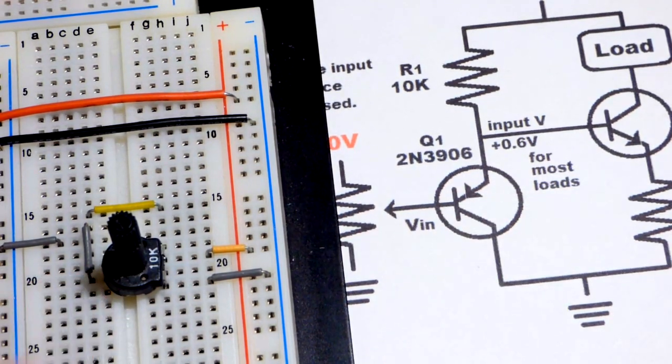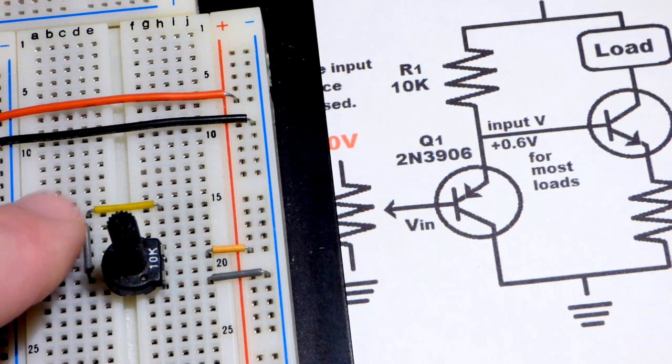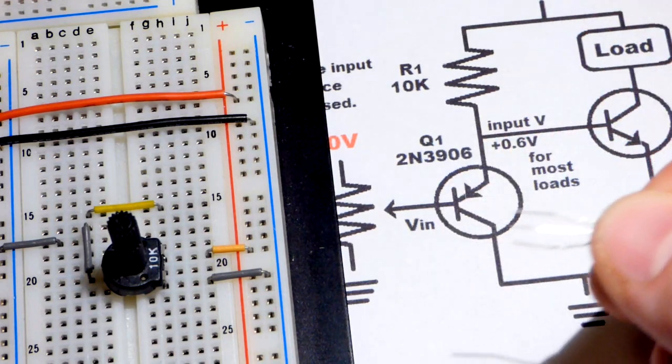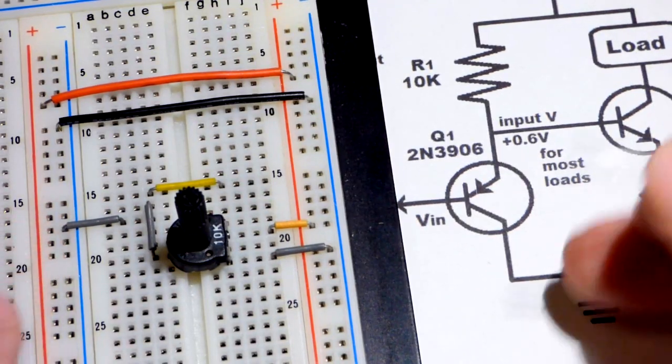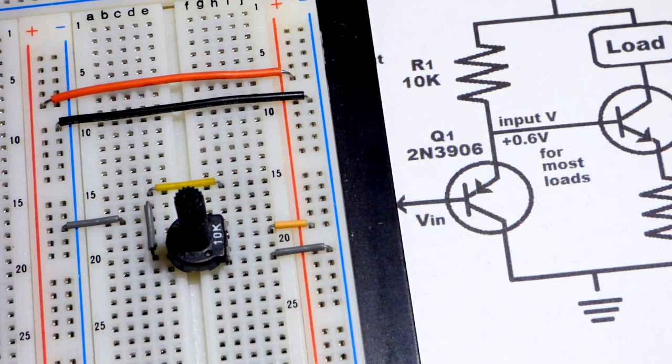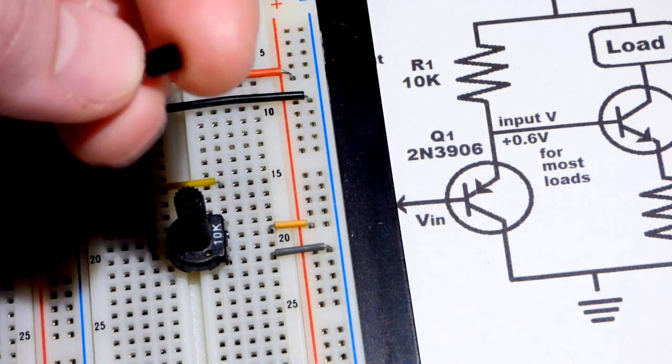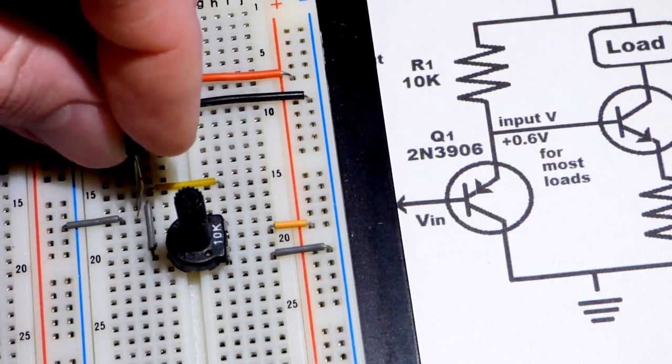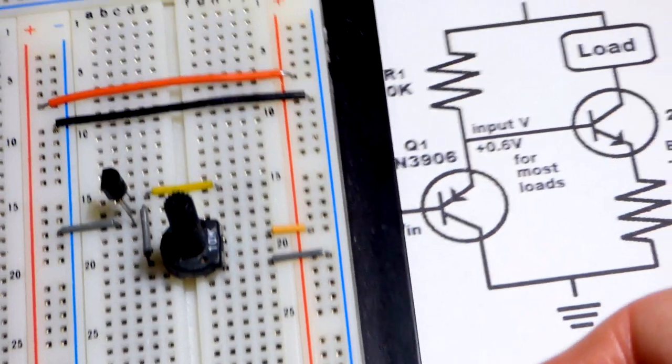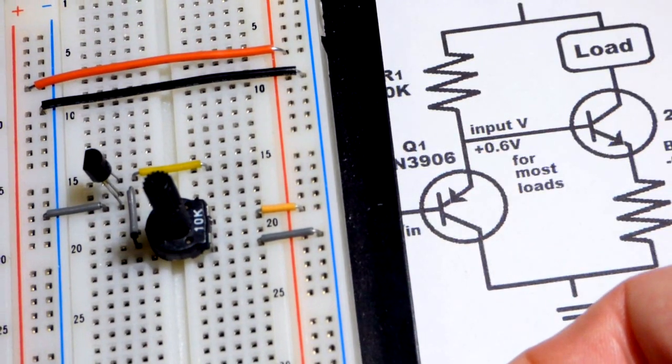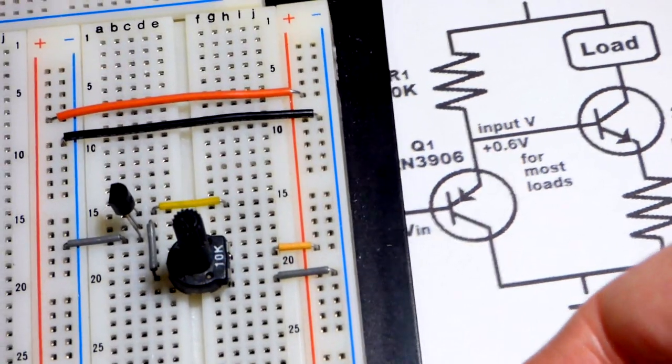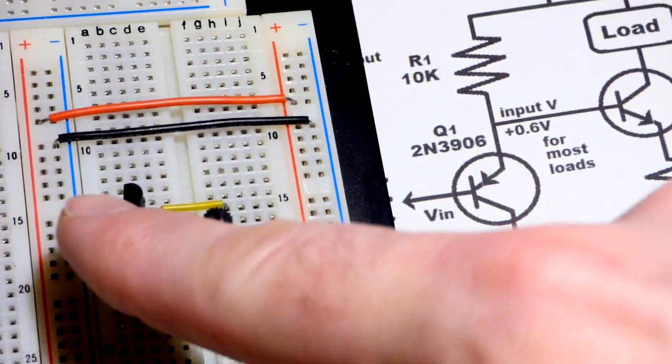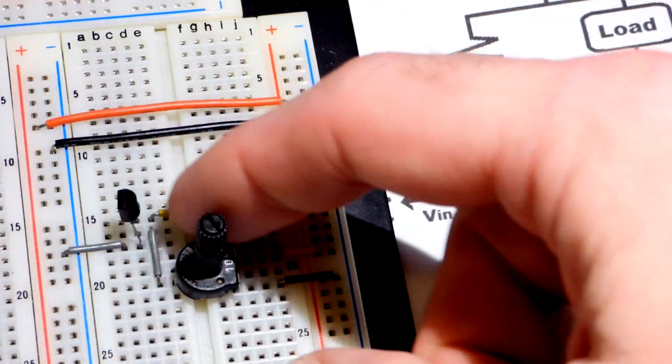The output of the trim pot comes up to the middle pin, the base. The collector, the right pin, will be going to the negative rail—our ground, our zero volt reference point. I'll have the flat side facing to the left and make that connection. You can see the trim pot goes to the base and the collector goes to ground.